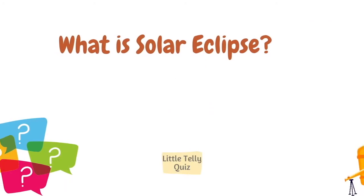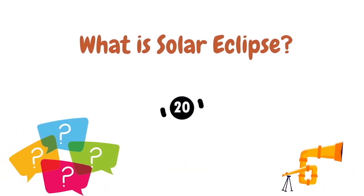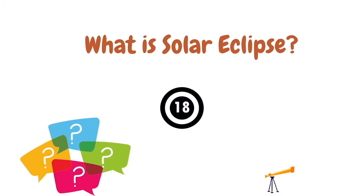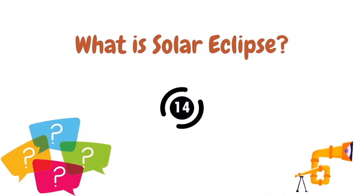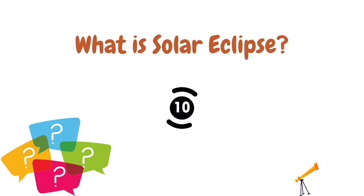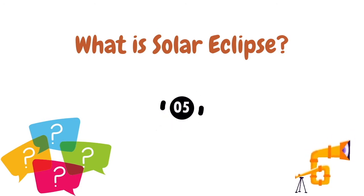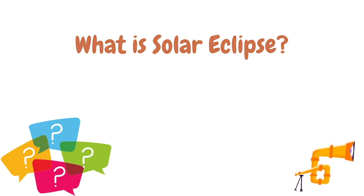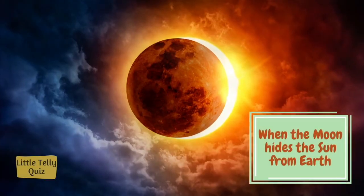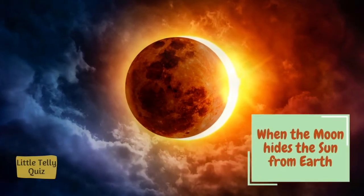What is a solar eclipse? The answer is when the moon hides the sun from Earth.